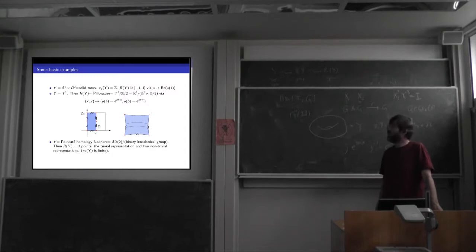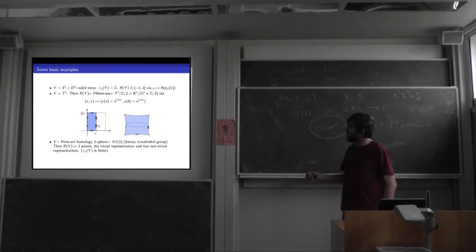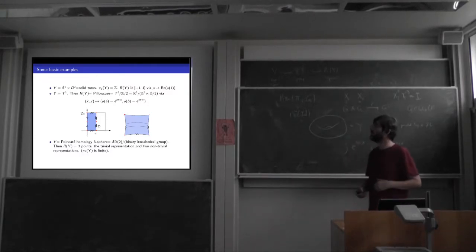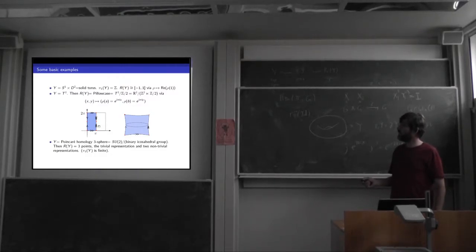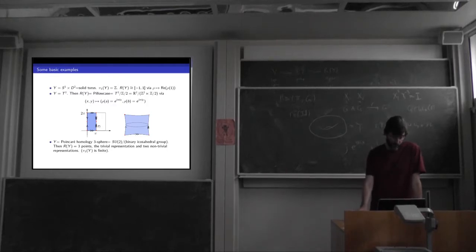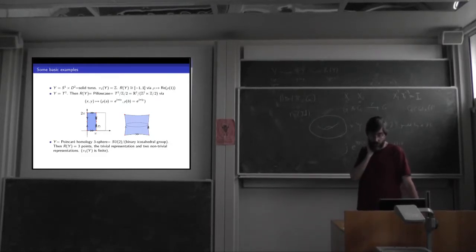Adding 2π or a multiple of 2π to x or y gives the same homomorphism, explaining the quotient by the integer lattice. Conjugation by the quaternion j sends (x,y) to (-x,-y), so there's an additional ambiguity. This space is the pillowcase — equivalently, you take a torus and apply the hyperelliptic involution, a Z₂ action with four fixed points, and the quotient is the two-sphere. That's the character variety for the two-dimensional torus. It's homeomorphic to a two-sphere but has four singular points.